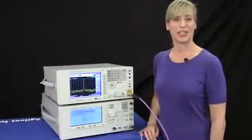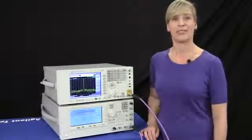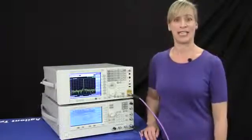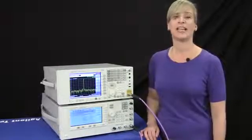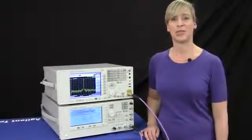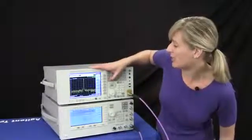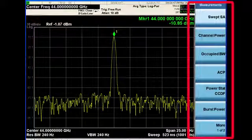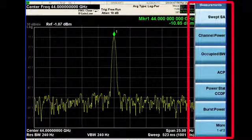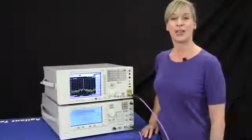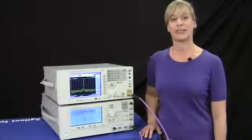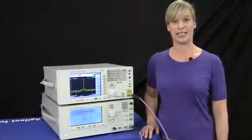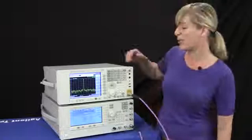For my next demonstration, I'd like to highlight the measurements and applications available on the EXA. The EXA comes with standard built-in power suite measurements, which are located under the measure key. You can see we have measurements such as channel power, occupied bandwidth, and adjacent channel power. Agilent also offers over 20 advanced measurement applications that can be added to the EXA, and these are located under the mode key.